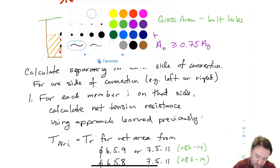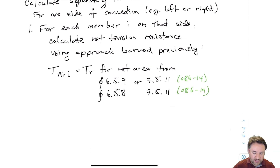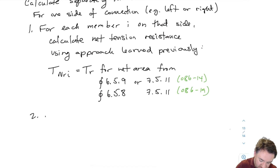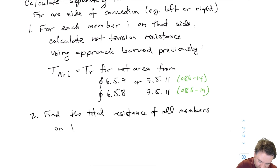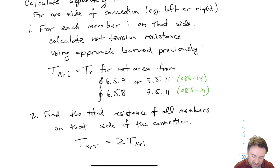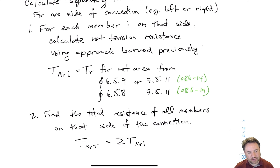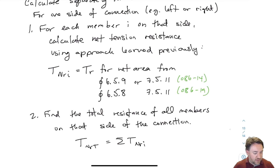Once I find the net tension strength T_nri for each member on that side of the connection, I find the total resistance T_nrt by summing T_nri for all members on that side. For a three-member connection with two members on the left side, I add the net tension strength for both — or if they're identical, I just multiply by two and calculate it once.